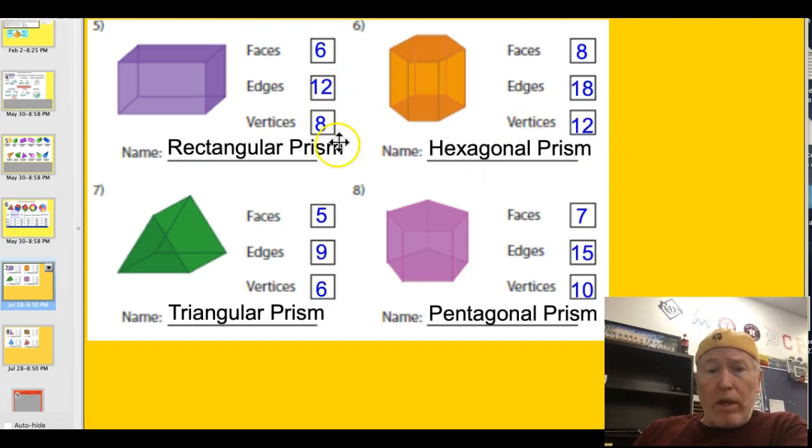All right. Let me see if I can get it to work. Here we go. Oh, rectangular prism, hexagonal prism, pentagonal prism, triangular prism. You can check your numbers for faces, edges, and vertices.